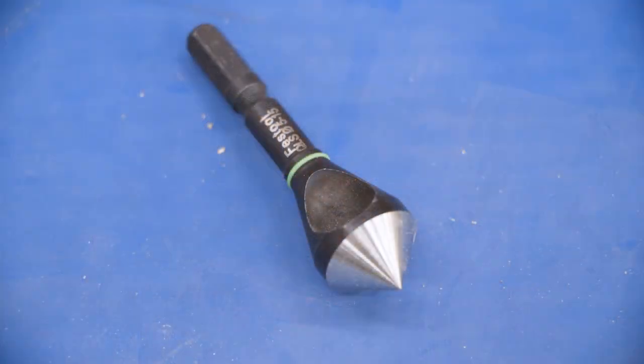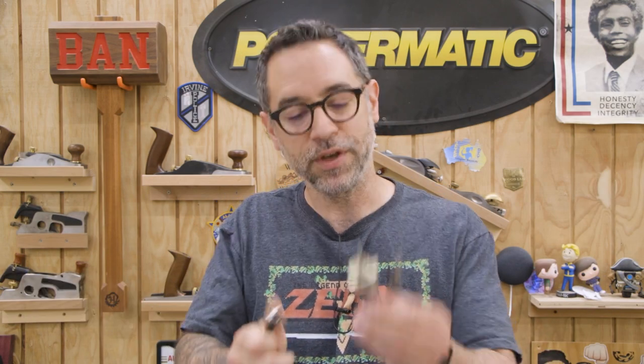Now, another option I at least should mention here is you don't necessarily have to get an all in one countersink bit like this. You can use regular bits to do your pilot hole and then you could use a specialized countersink bit. That's just the separate tool. If you want to go that route with separates, it works just fine. But I think it's a lot easier to have one that does everything in one shot.